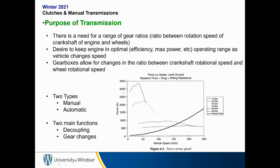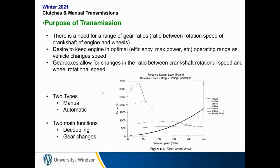There are two types of transmissions: manual and automatics. Every transmission has to perform two functions: decoupling — that's decoupling between the engine spinning and the wheel spinning — and gear changes. These are two things that must occur.